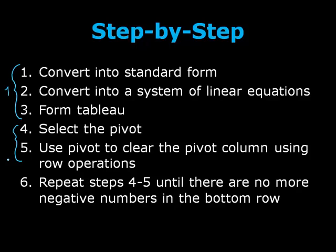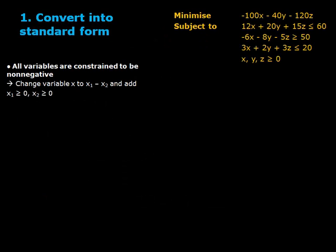We are now going to work through an example. Step 1: Convert into standard form. What does this mean? First, all variables must be constrained to be non-negative. All our variables already are. However, if we were to have a variable that wasn't, for example w, we would replace it with w1 - w2, and add the constraints w1 and w2 must be greater than or equal to 0.